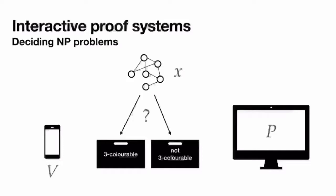I want to motivate the problem we're going to study, and to do that I have to remind everyone about interactive proof systems and what they're used for. Let's suppose that our purpose is to decide whether x is three-colorable or not, where three-colorable means a graph can be colored using only three colors such that each edge connects two vertices of different colors.